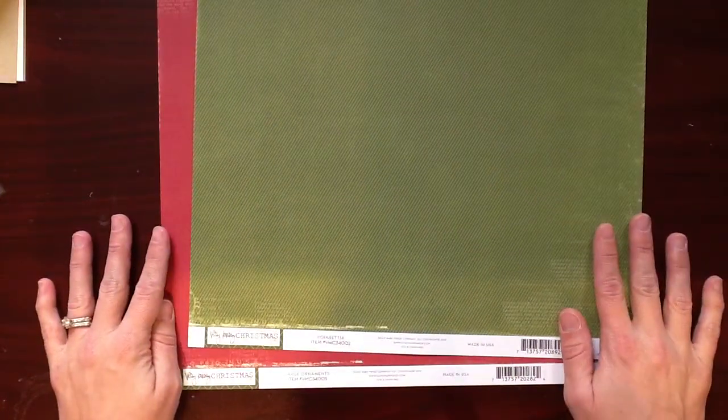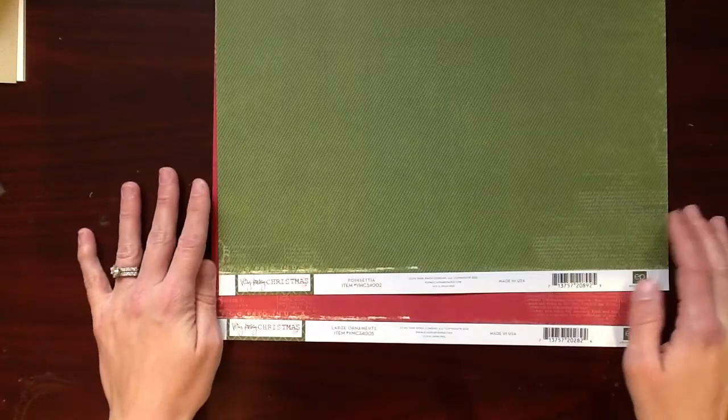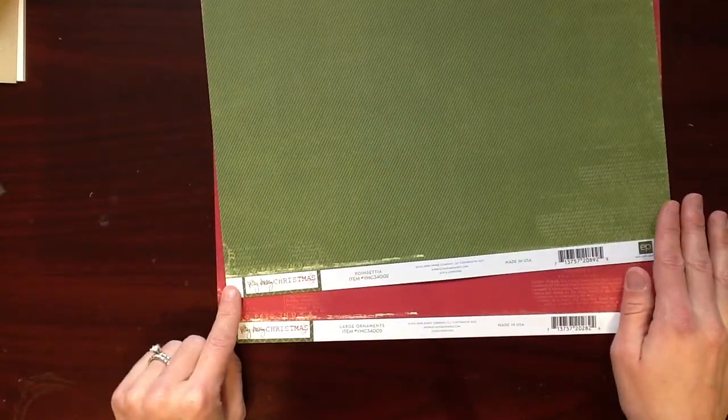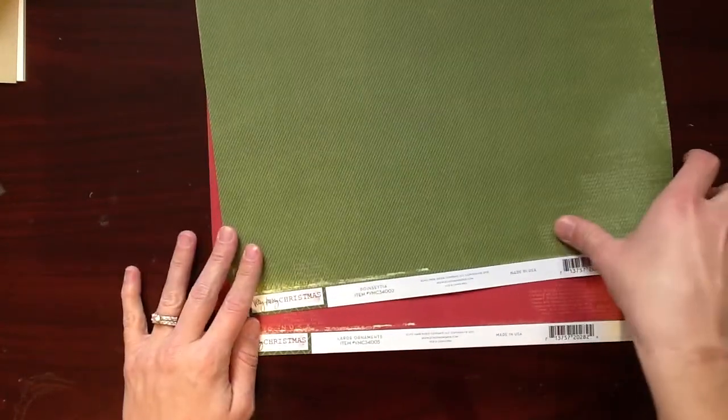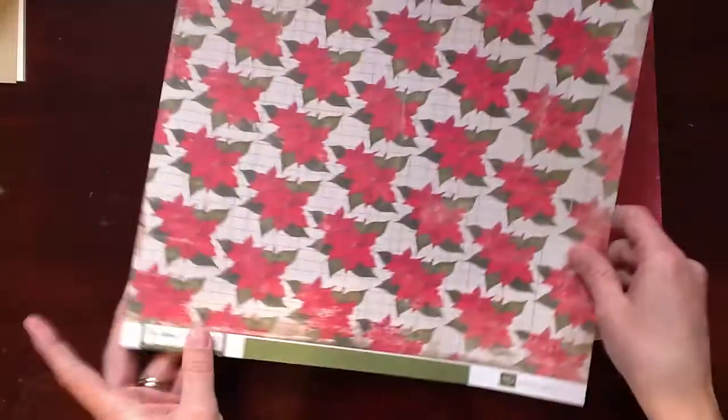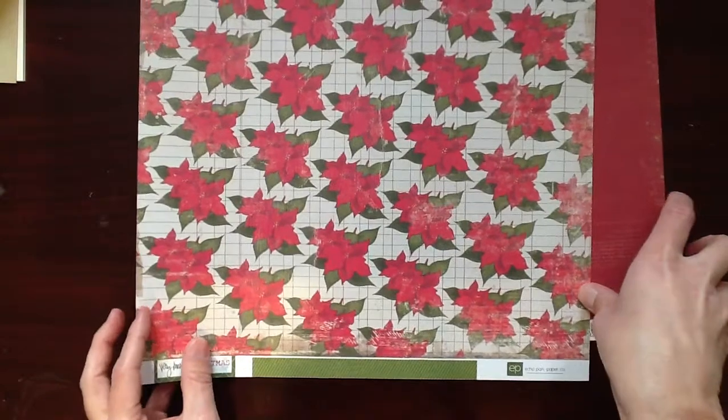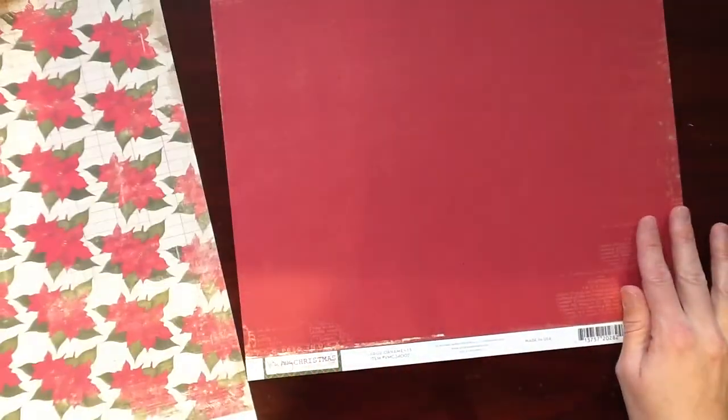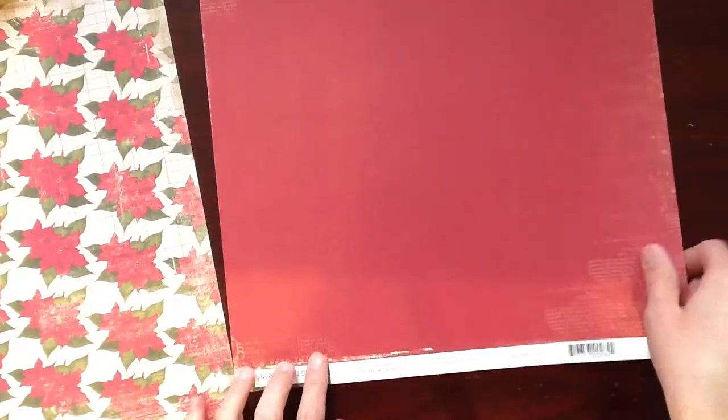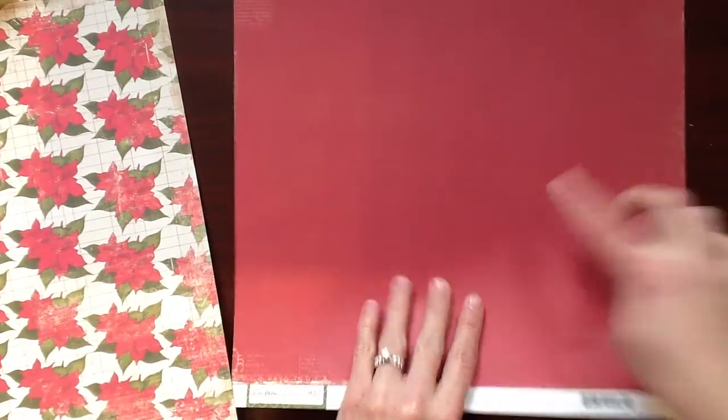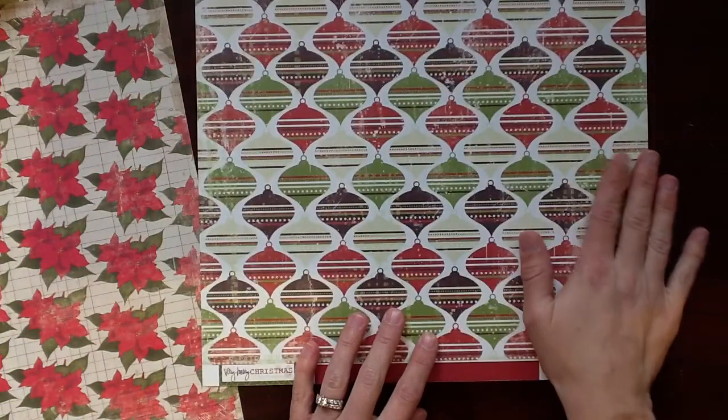So today I'm starting out with just two pieces of paper. They are from the Echo Park Very Merry Christmas line. This one is called Poinsettia, and it's got green with some stripes, and Poinsettia is on the back. And this one is called Large Ornaments. It's red with some stripes, and then these beautiful ornaments on the other side.